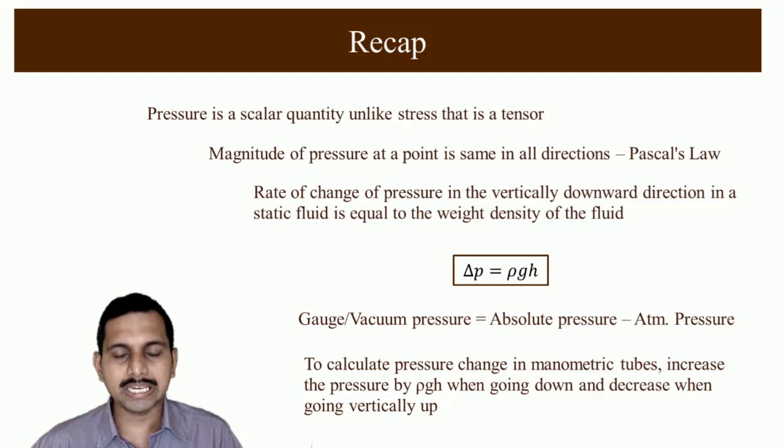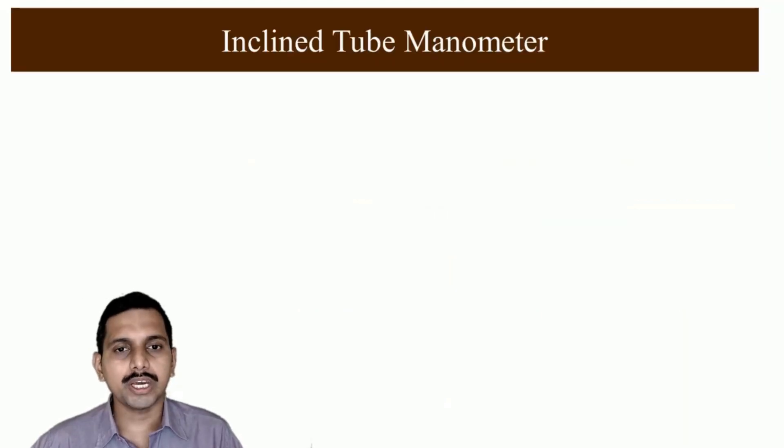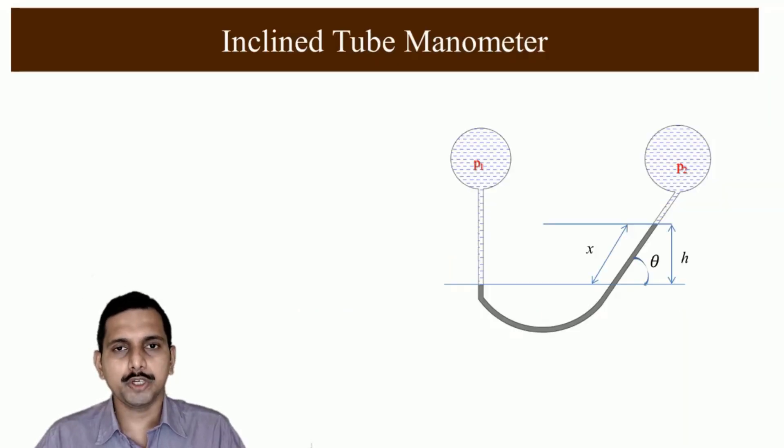We will discuss what is inclined tube manometer. Why do we use it? We use it when the difference in this h, this h distance is very very small. When it is very small, if we tilt this by an angle theta then what happens, this x distance will be larger than h and that is why we can measure this more accurately.